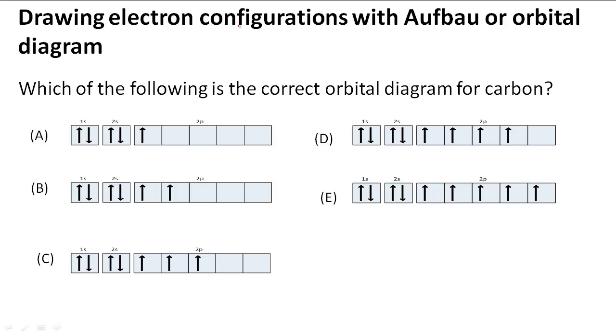Drawing electron configurations with the Aufbau or orbital diagram. In this problem it asks us which of the following is the correct orbital diagram for carbon. So what do we need to do to find out what is the correct orbital diagram? What is an orbital diagram?